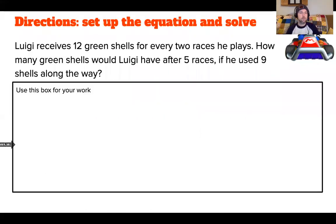So let me get rid of this. And there we go. So Luigi receives 12 green shells for every two races he plays. How many green shells would Luigi have after five races if he used nine shells along the way? So as always, when we are solving an equation, we first look for the numbers we're going to use. So I've got 12, 2, 5, and 9.